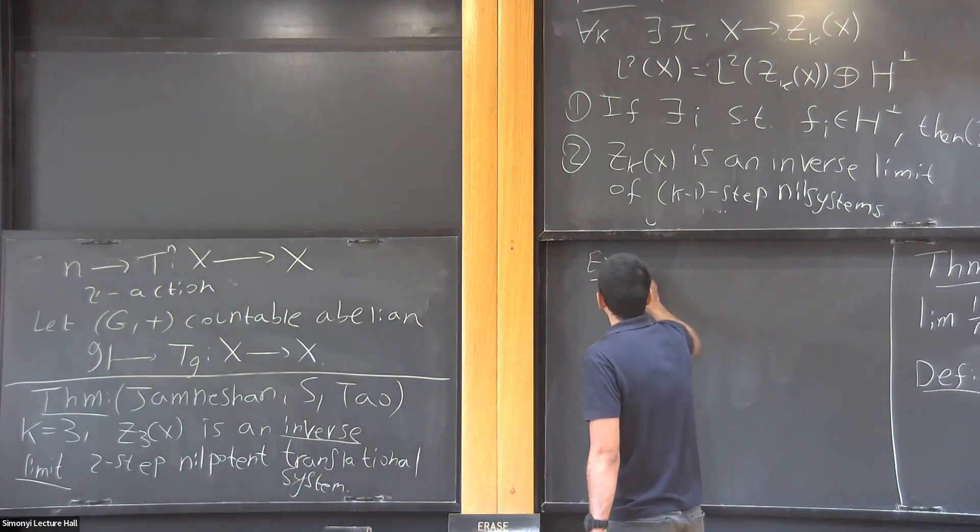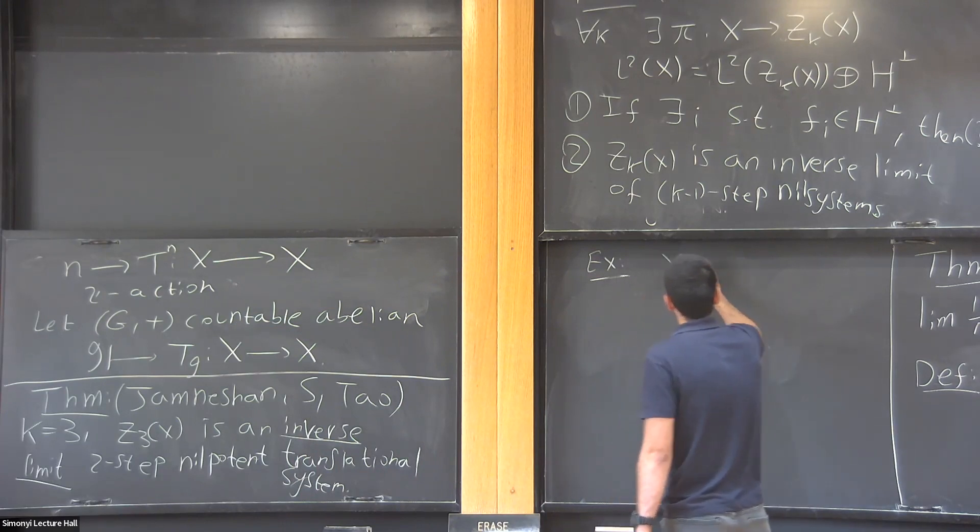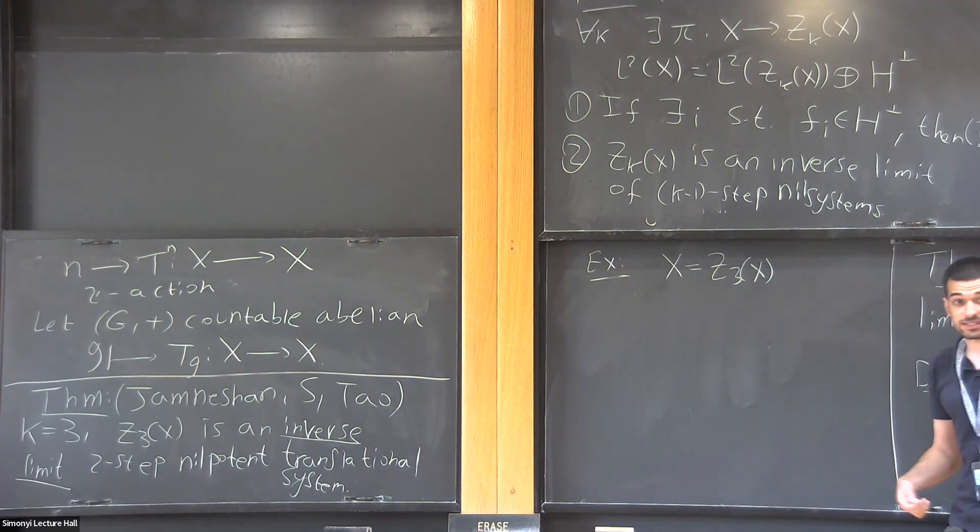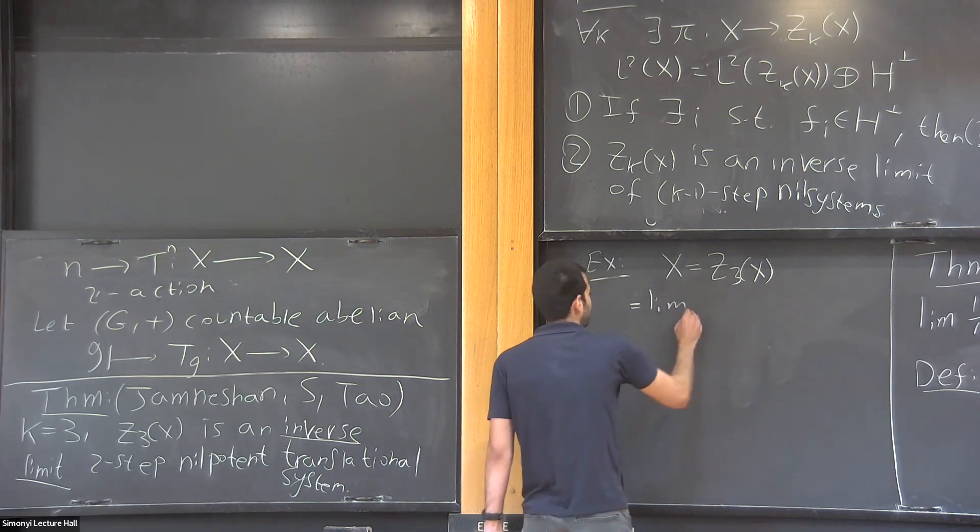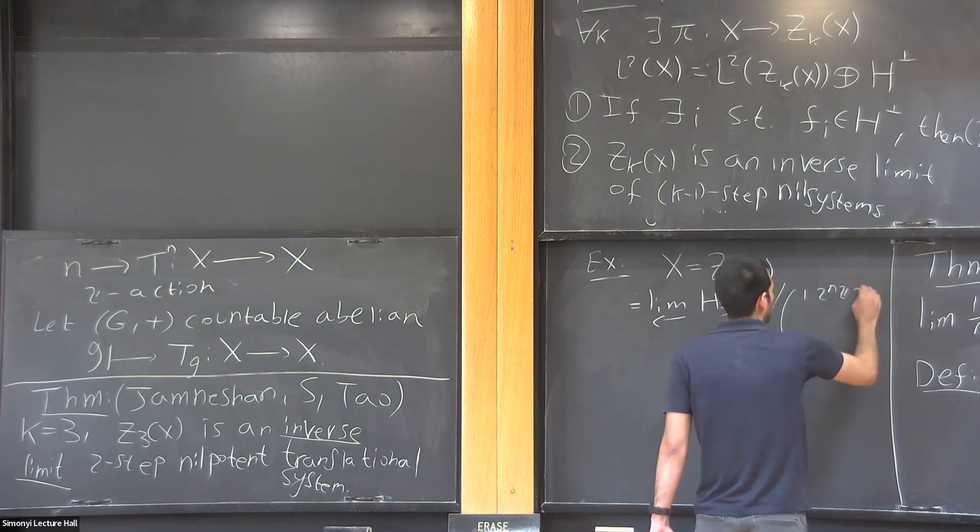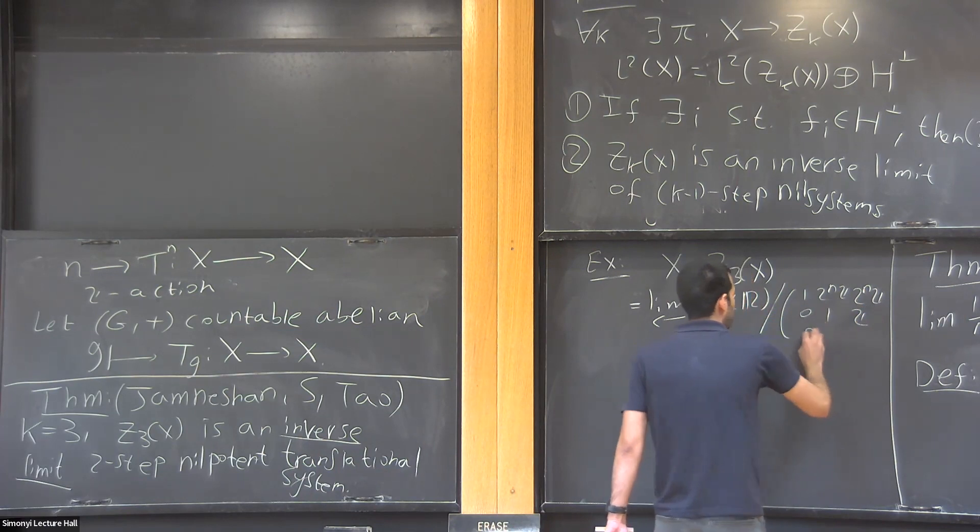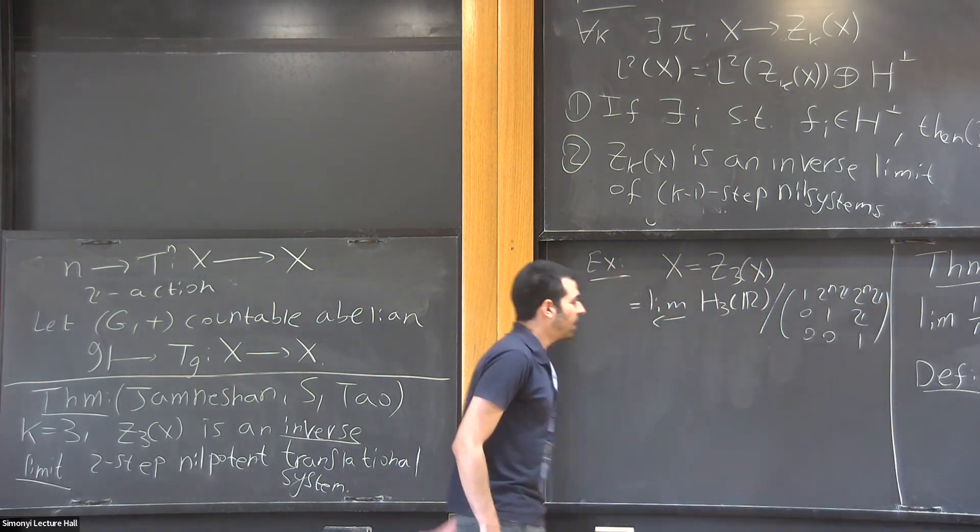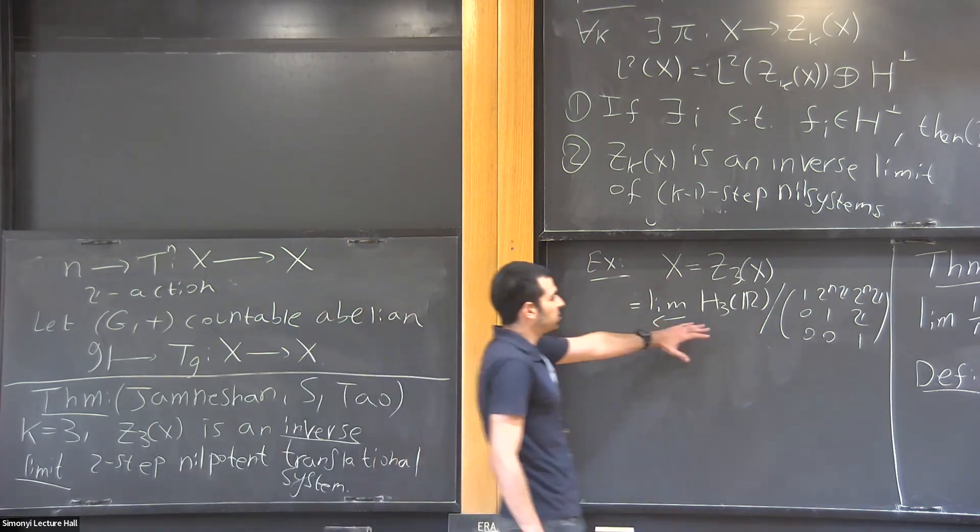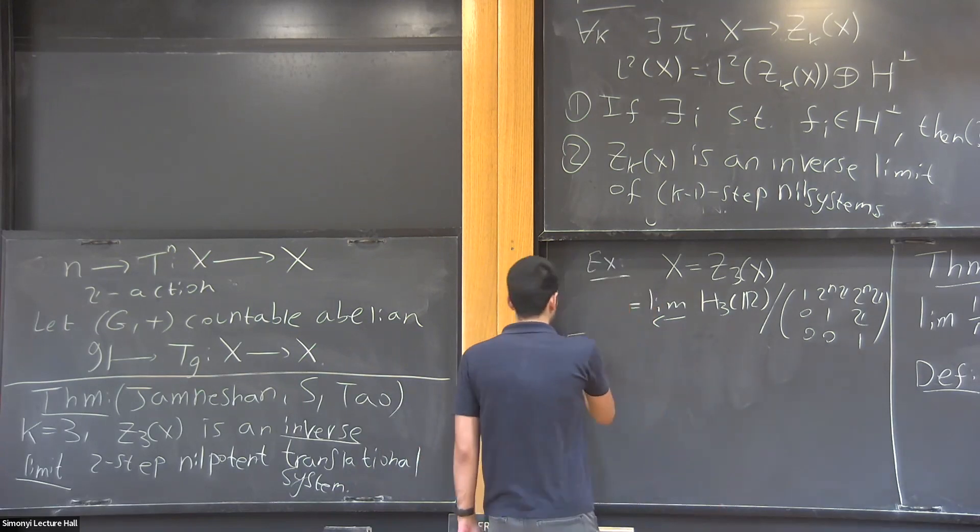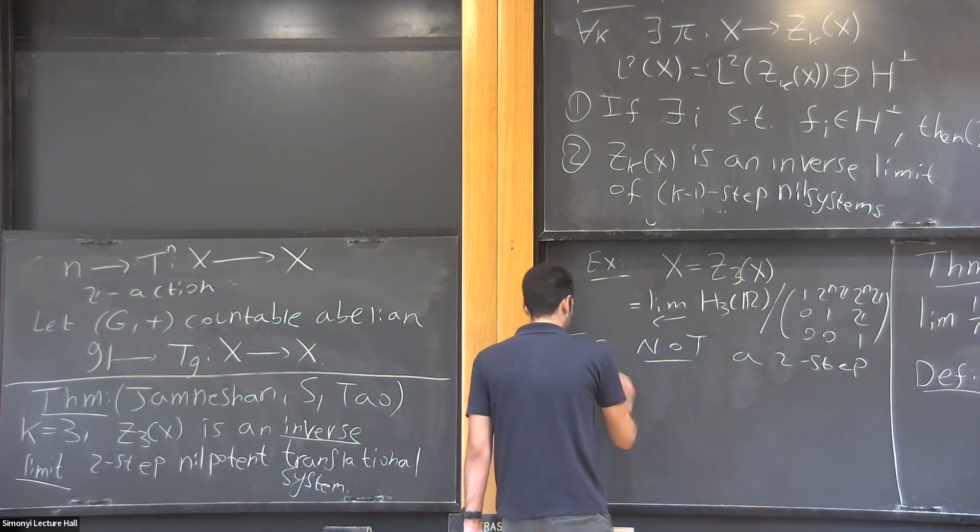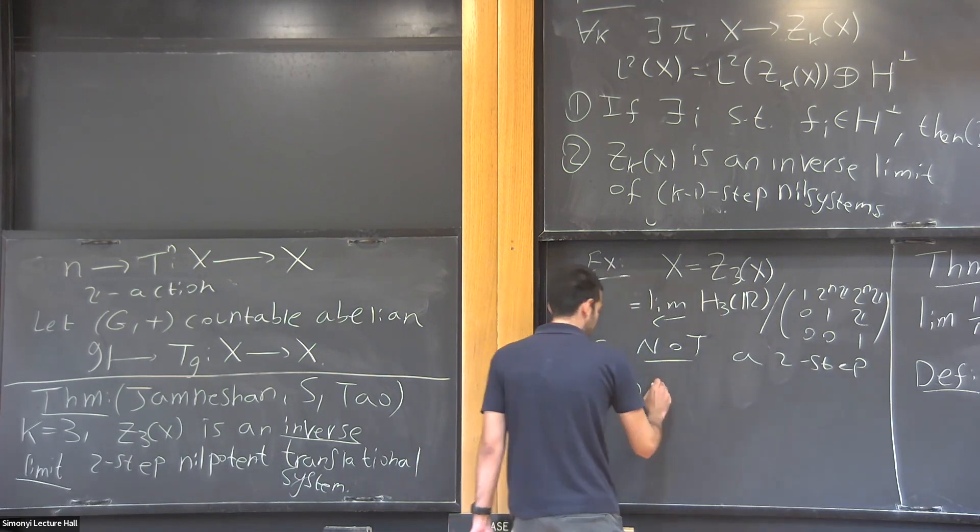And even in the context of Z-actions, there is an example of Rudolf where he constructed a system X which equals the special factor, which means that this is an inverse limit of nilsystems. It is an inverse limit of some Heisenberg systems. Specifically they look like this: Heisenberg over R mod 2^n Z, but here I only take Z, and the action is some multiplication by 1 alpha beta gamma. He proved that even though this is an inverse limit of nilsystems, it is not a two-step nilpotent translational system, so you can't avoid using two-step nilpotent translational systems.